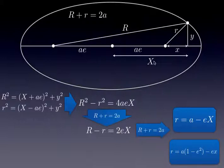And just by using the fact that this uppercase X is small x plus ae, inserting that in this expression we get a second relation directly between the radii and x.